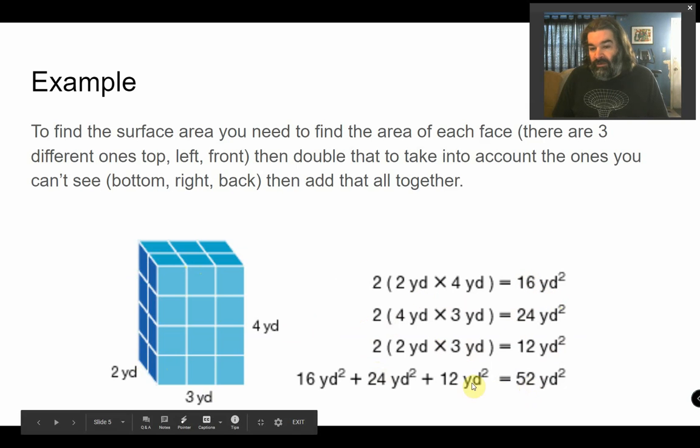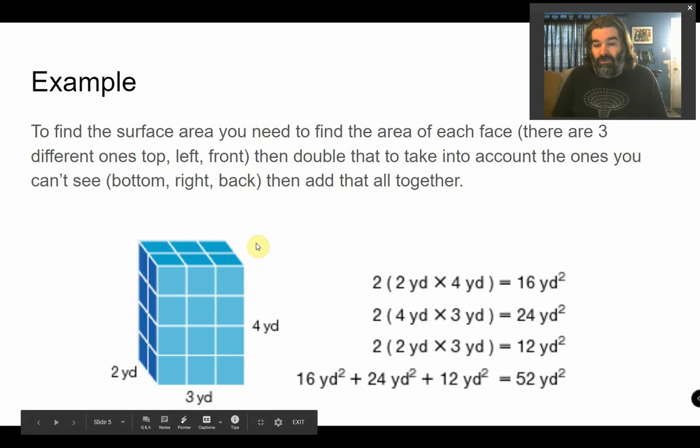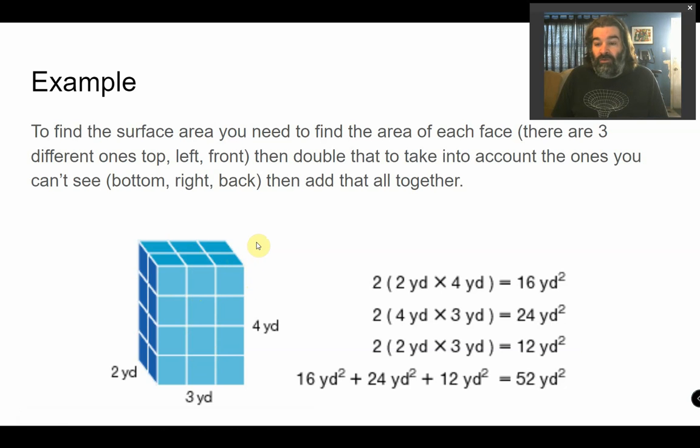Then we add them all together, and that gives you your surface area. So the way you find it is find the area of each of these, multiply them by 2, and then add it all together. So this would have an area of 52 yards squared.